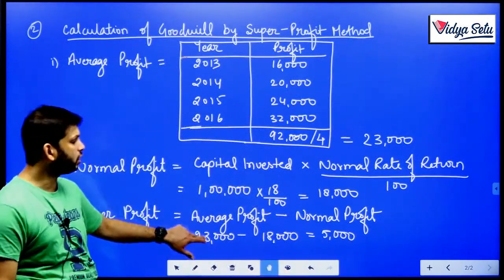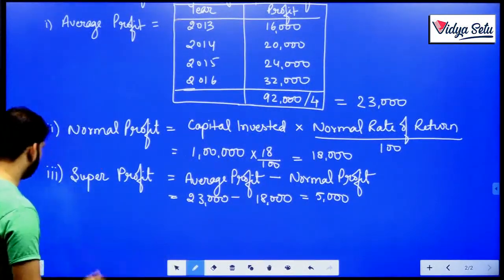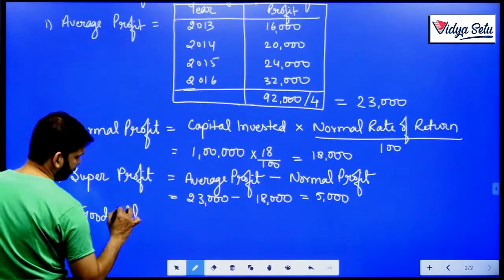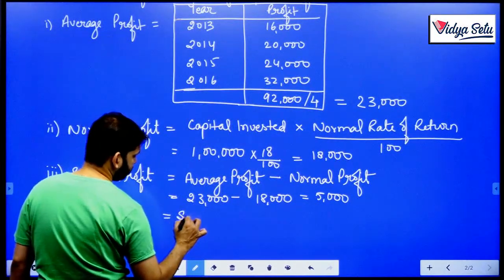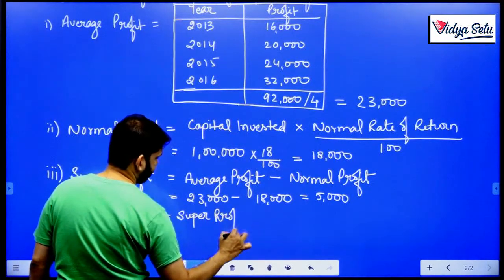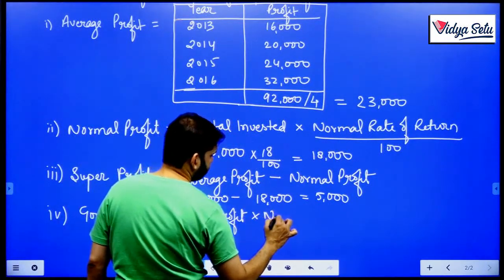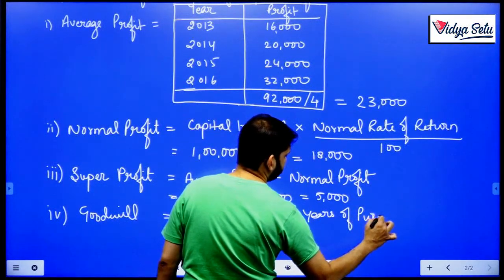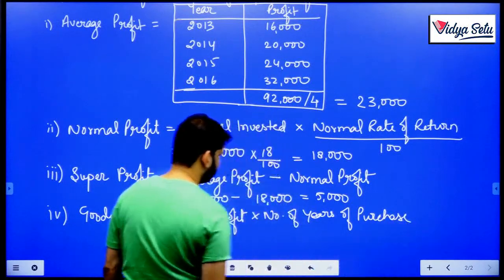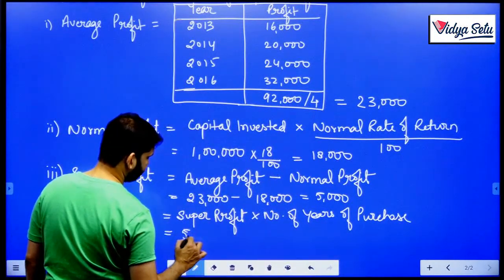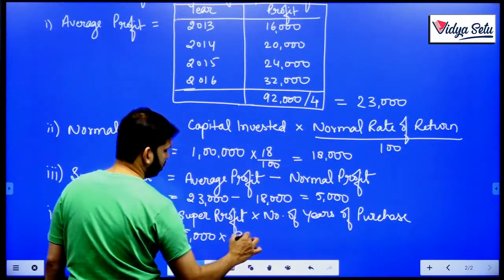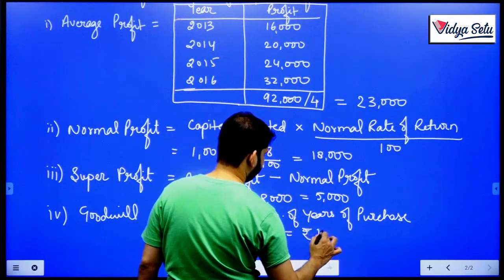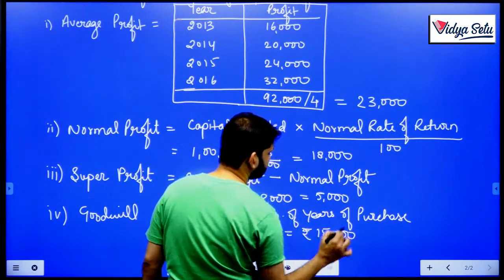This is just the super profit, this is not our goodwill. Because goodwill in this method equals to super profit multiplied by number of years of purchase. In this question it was 3 years purchase. So 5,000 multiplied by 3 years equals to rupees 15,000 as our goodwill.